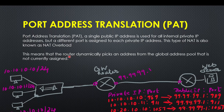By using PAT, we are going to find an IP. There will be a certain IP address through which we are going to reach the Internet. We will have a few number of public IPs. How do we do this? We will use the port — what we call NAT overload.